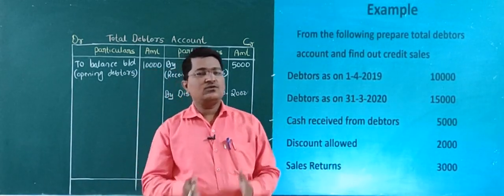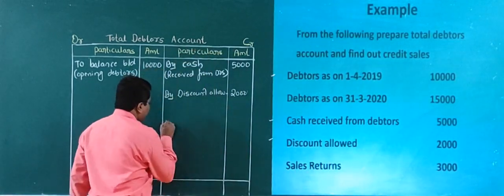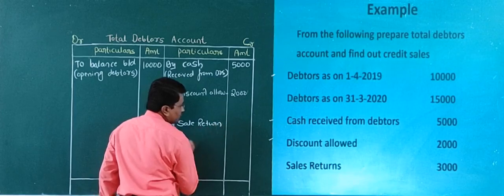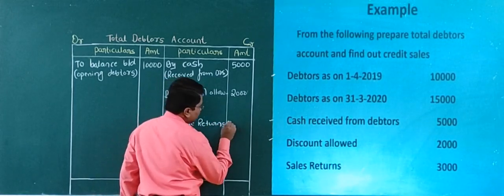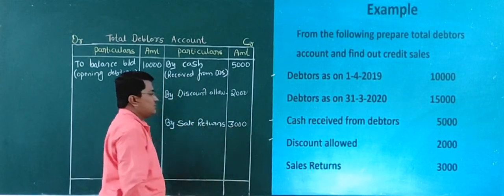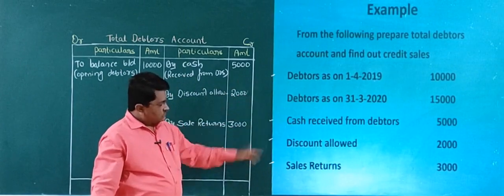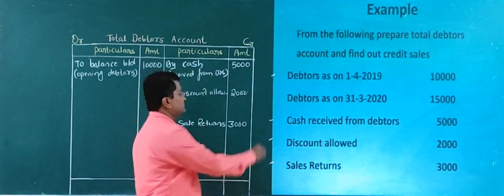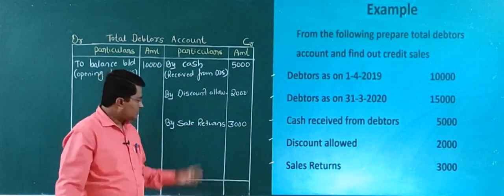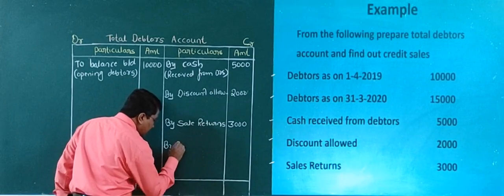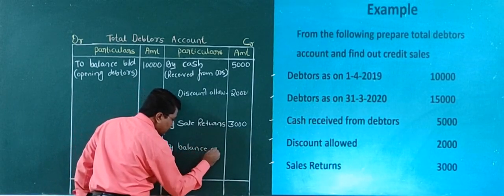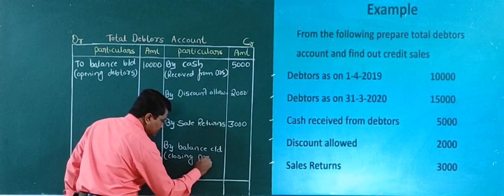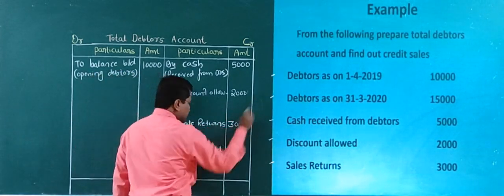Next, sales return — it is also recorded at the credit side. By Sales Return — rupees 3,000. Now all entries are taken, but we have left one — closing debtors. We now record it lastly as 'By Balance Carried Down' (closing debtors). The amount of closing debtors is 15,000.